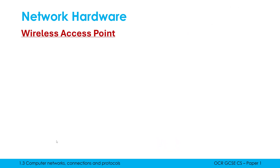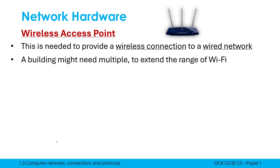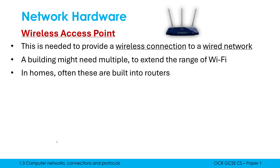Looking at some more visible examples of network hardware, starting with a wireless access point. A wireless access point, as the name suggests, is needed to provide a wireless connection to a wired network — so if you want to use Wi-Fi, you need one. Large LANs, like in an office building, might need multiple wireless access points to extend Wi-Fi range. In homes, these are often built into routers, and one is sufficient to cover the house.